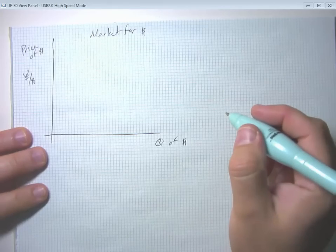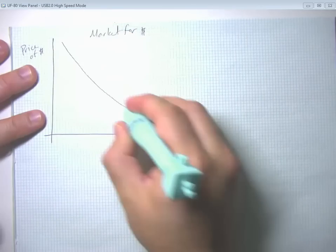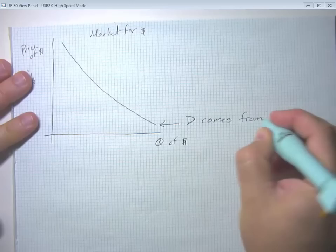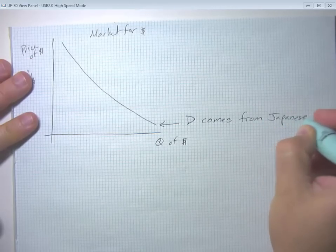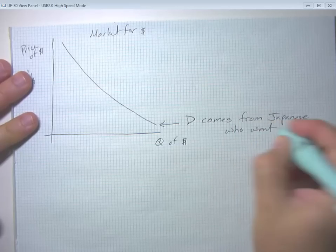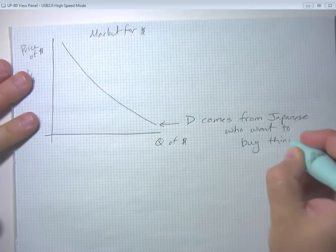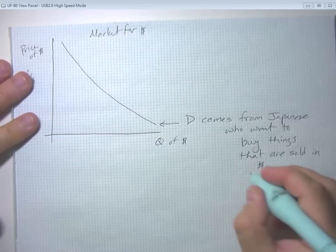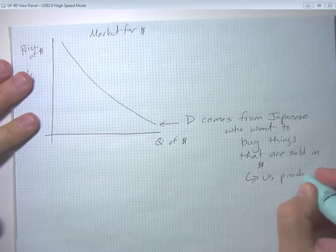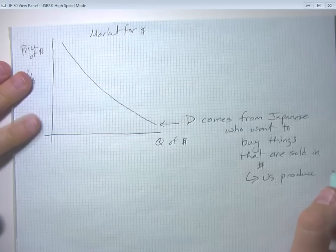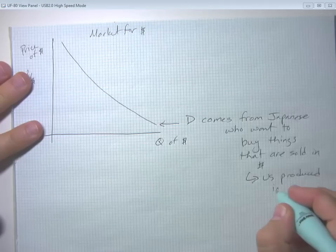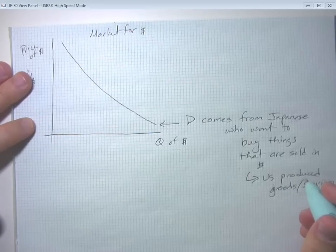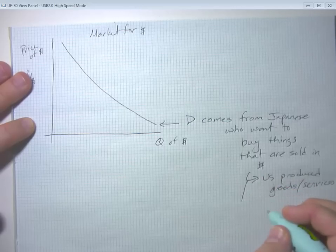Well, where does the demand for dollars come from? Well, the demand for dollars in the foreign exchange market, demand comes from Japanese or other foreign people who want to buy things that are sold in dollars. So most obviously, that's US produced goods and services because US producers pay their workers and suppliers in dollars, and so they want to be paid in dollars. So if more people want to go to Disneyland, that increases the demand for dollars. Or if more people want Harley Davidson's or something like that, that increases the demand for dollars.